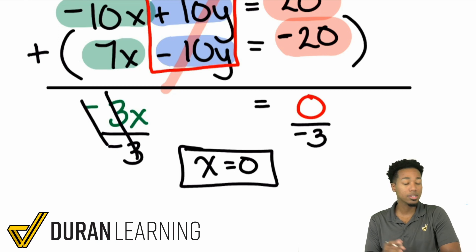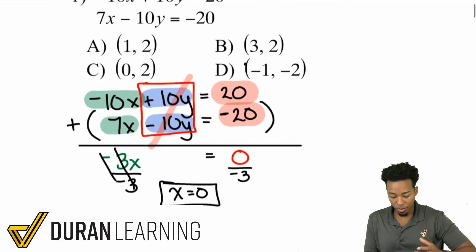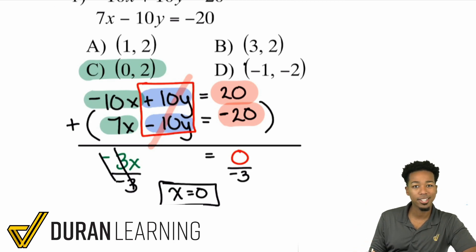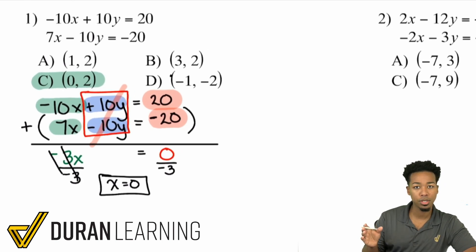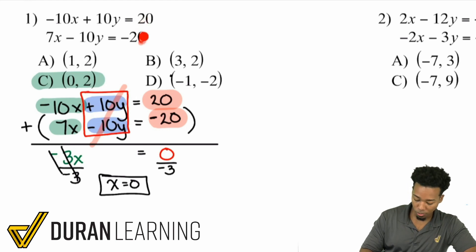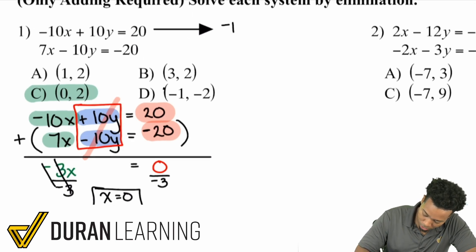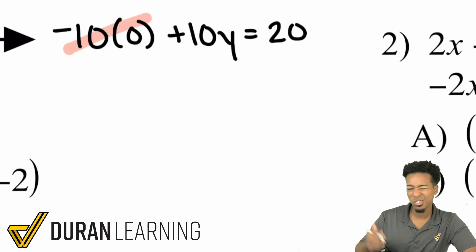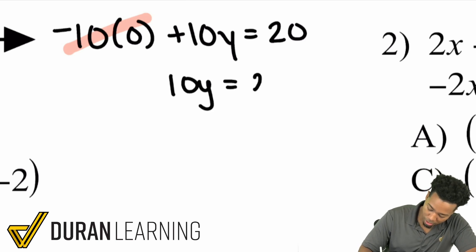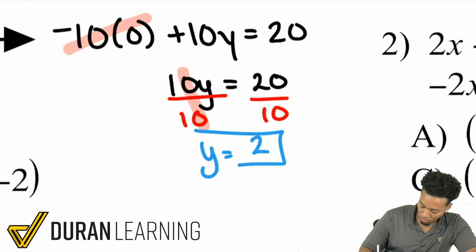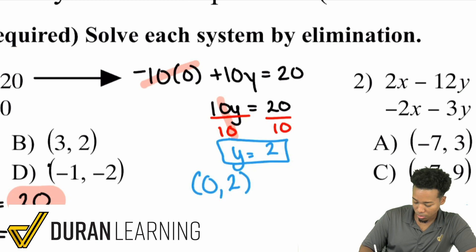We've got x equals 0, and in some problems you're going to have to go ahead and solve for the y variable. The answer is c because c is the only one where x equals 0. But I'm going to show you how to solve for y one more time. Just like with substitution, you can plug that value back in and solve. So using the top equation: negative 10 times 0 plus 10y equals 20. Zero times anything is 0, so that cancels out. We have 10y equals 20. Divide both sides by 10 — y equals 2. We have x equals 0 and y equals 2, so our answer is (0, 2).